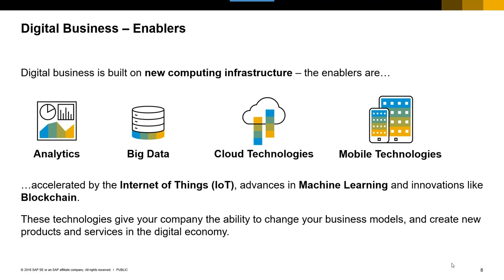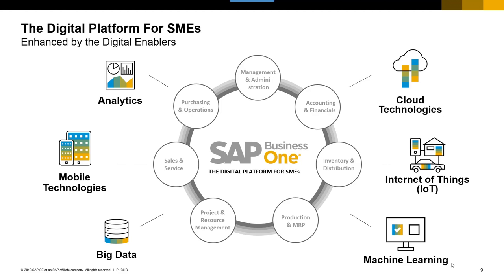The good news is your SAP Business One system gives you that digital core that enables you to do all of these things. SAP Business One, with all those functions across each different area of functionality, takes advantage of all these different enablers and provides information that can be integrated with them all. Your business is in a really good position to take that next step and, when you're ready, take advantage of all these different areas.